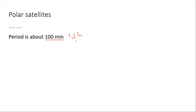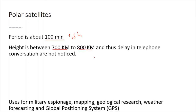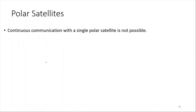Polar satellites have a period of approximately 100 minutes — about 1.5 hours — and orbit at heights between 700 and 800 kilometers. Because they are much closer to earth, there is no noticeable delay in phone conversations. They are generally used for mapping, weather forecasting, and global positioning systems.